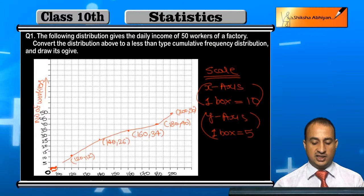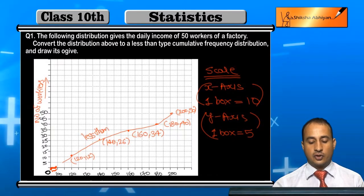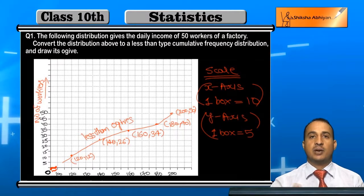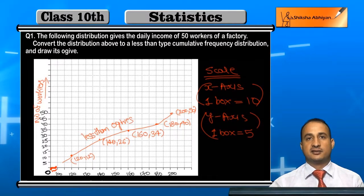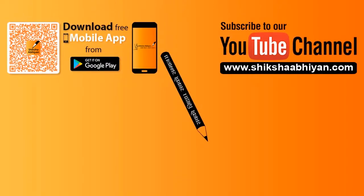The rough line approximated here is the less than ogive graph, which is always upward sloping.